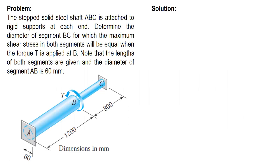The stepped solid steel shaft EBC is attached to rigid supports at each end. Determine the diameter of segment BC for which the maximum shear stress in both segments will be equal when the torque T is applied at B.